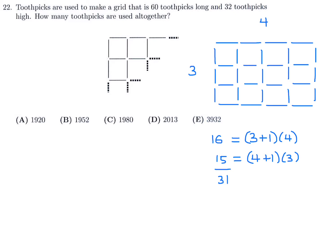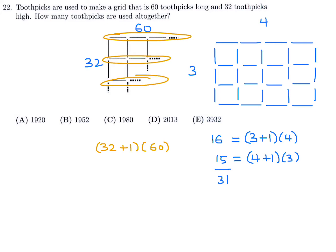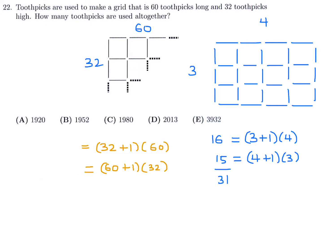There are indeed 31 toothpicks in the small example. Now applying the same method to the 60 by 32 dimensions: for horizontal rows, take 32 plus one times 60, which equals 1980. For vertical rows, take 60 plus one times 32, which equals 1952. Adding them together gives 3932. And 3932 is choice E for number 22.